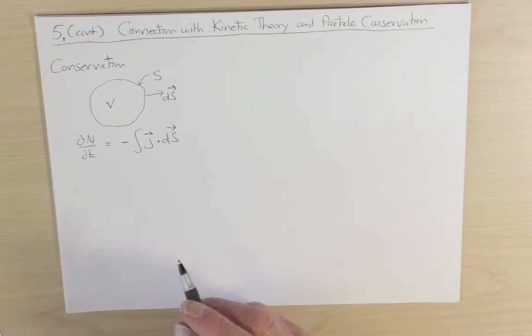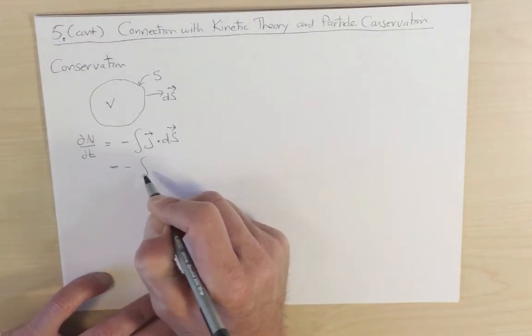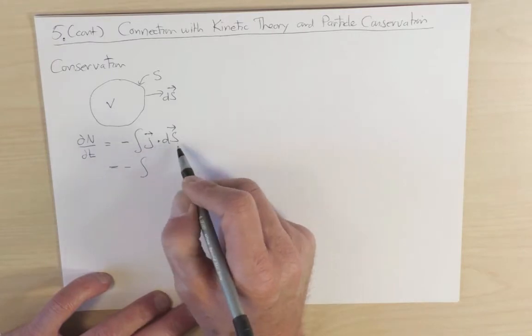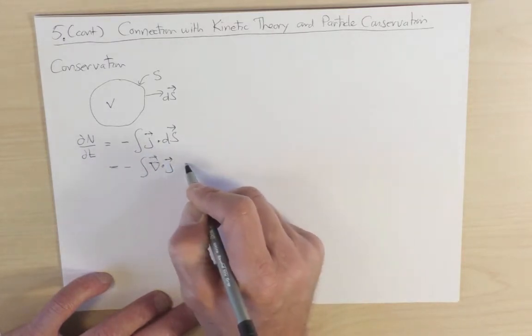Now I use the divergence theorem and write this on the right hand side. Instead of a surface integral j dot ds, I can write this as divergence of j dv.